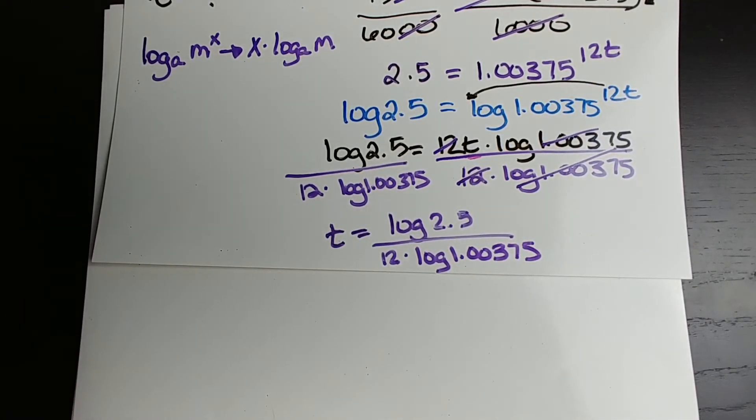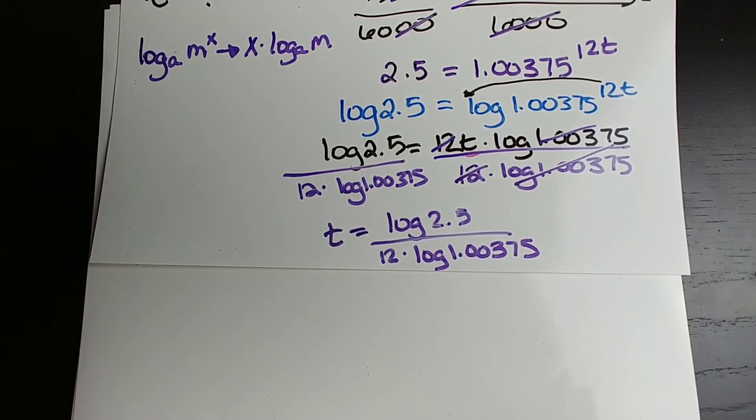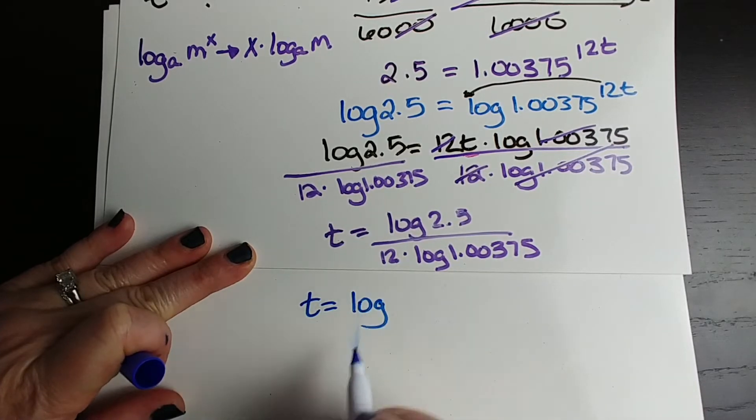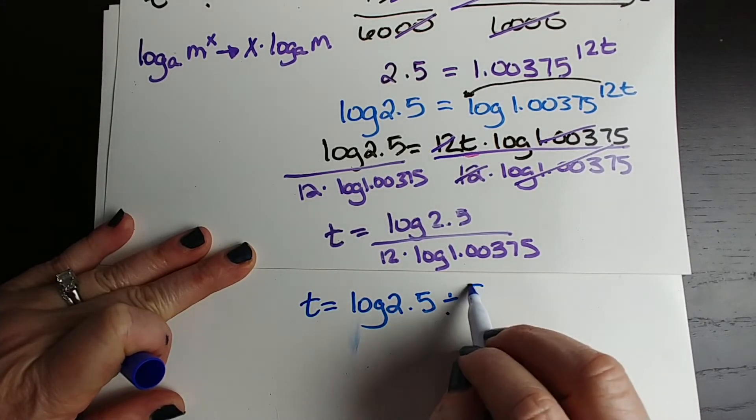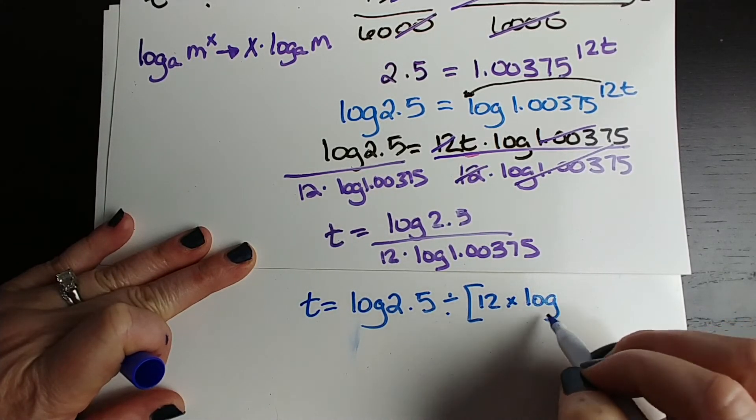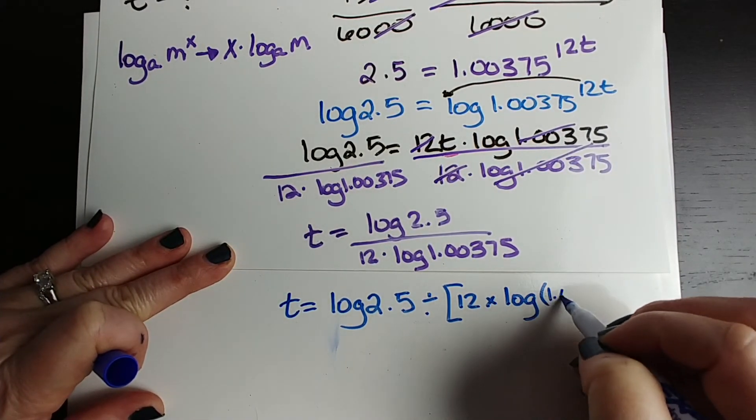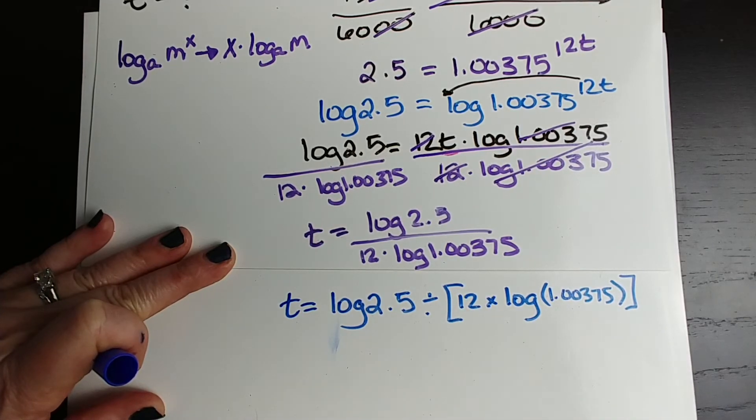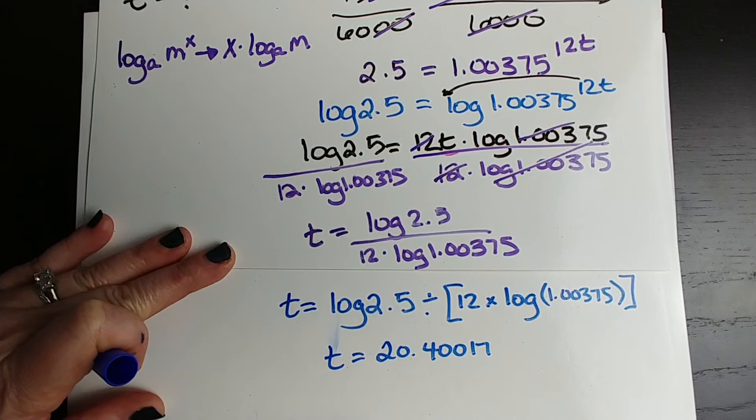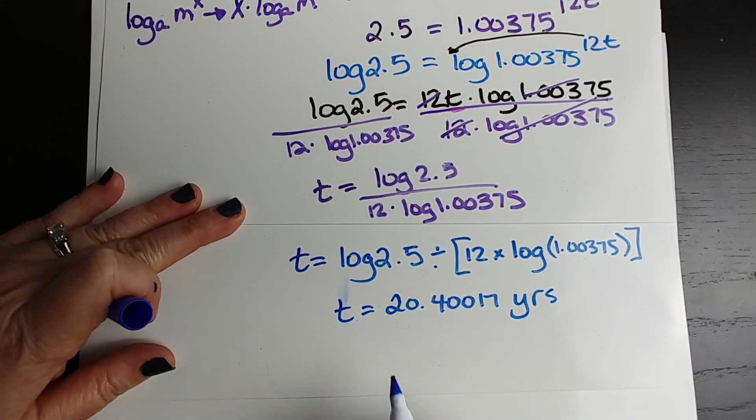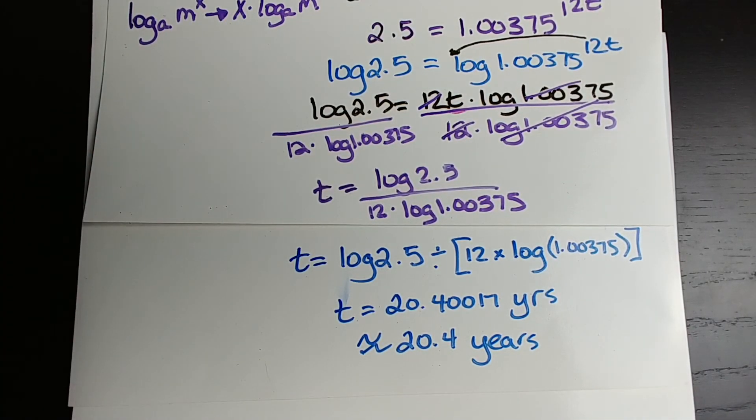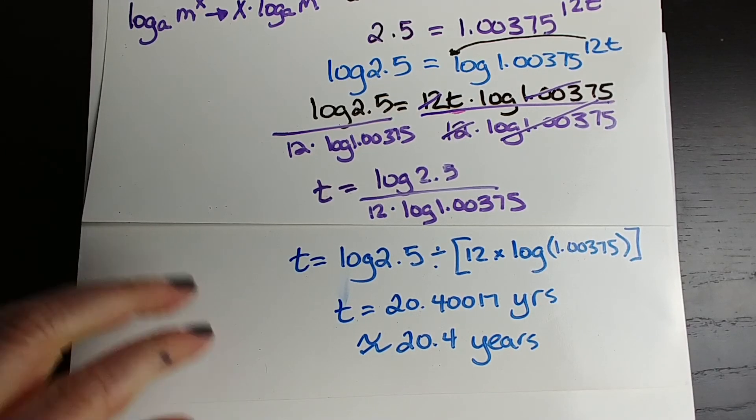Let me tell you how to put this into your calculator because a lot of times I see students have the work is perfect, and then they get the wrong answer. So let's say T equals, and you're going to put into your calculator log 2.5 divided by, open parentheses, 12 times, and then log, and your calculator is going to automatically open a parentheses, 1.00375. You need to close that parentheses and then add another, so double parentheses because you're in a denominator and you have two things that you're doing something to. When you put it in, you should get 20.40017, and that's enough, years. So we will approximate this, 20.4 years for an investment of $6,000 compounded monthly with an interest rate of 4.5% to reach $15,000. That's if you put nothing in once you invested the $6,000.